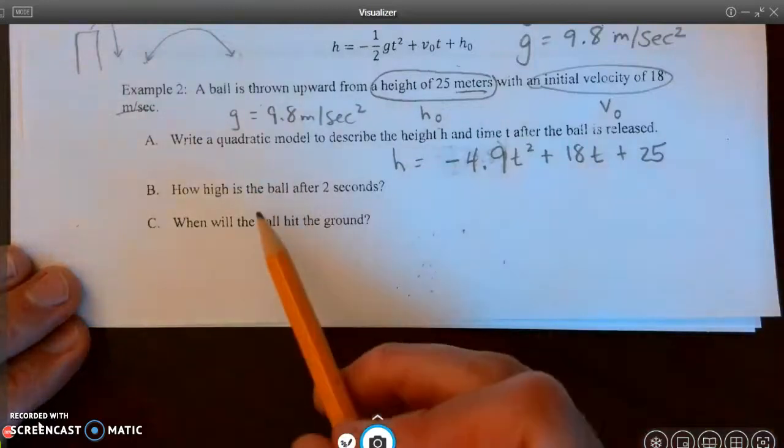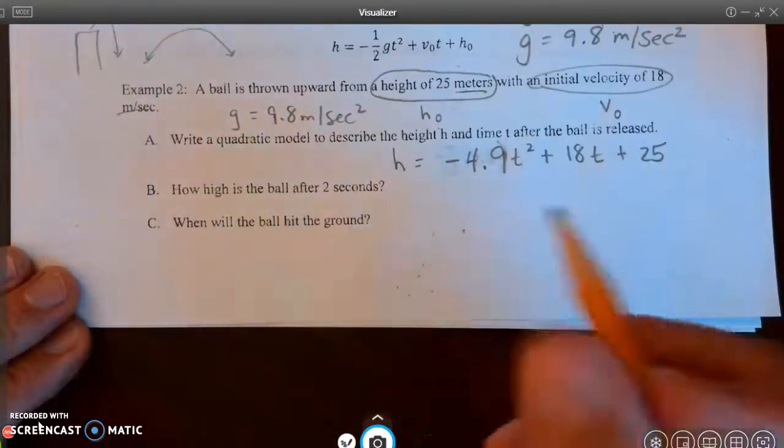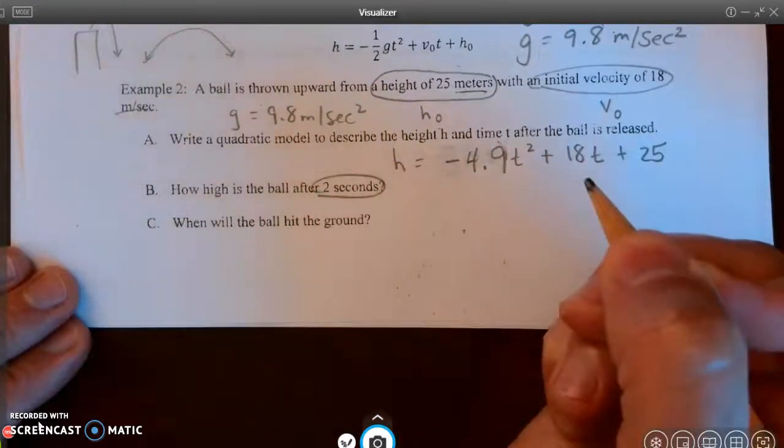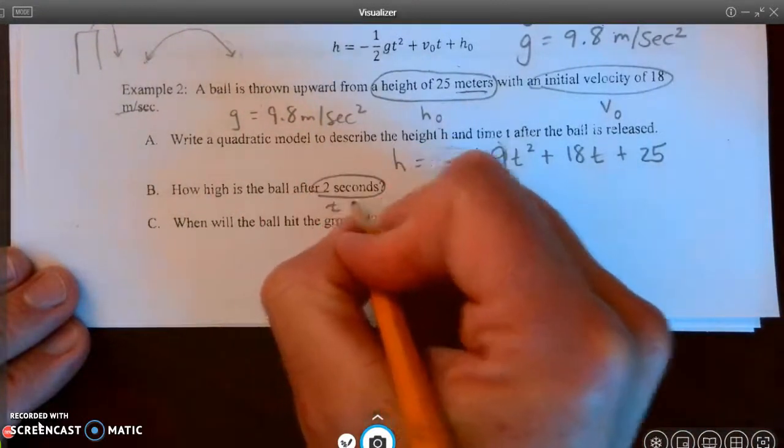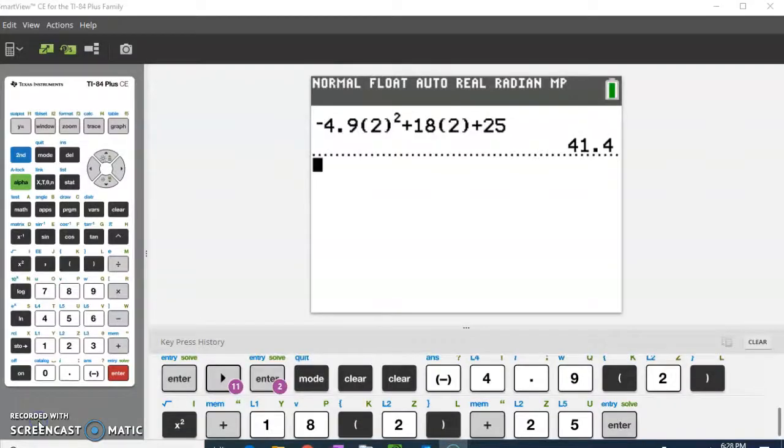All right, the next question says, how high is the ball after two seconds? So two seconds means I'm going to let t equal 2. All right, so I typed it into my calculator, and I found out that it's 41.4.